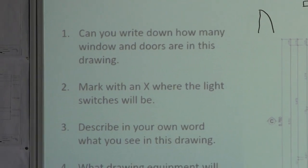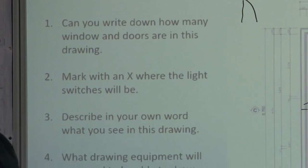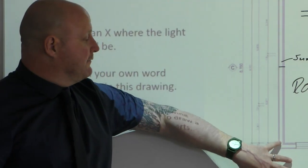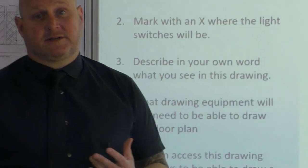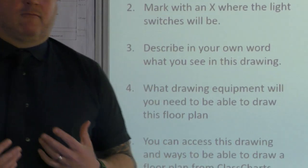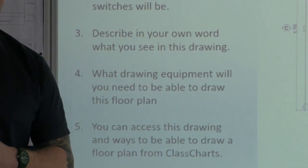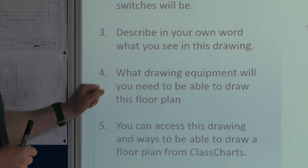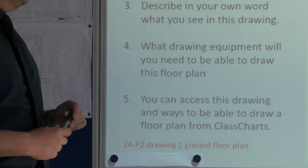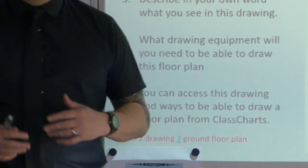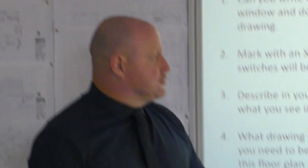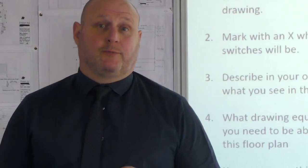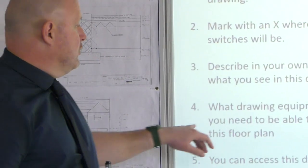The main part is describing in your own words what you see in this drawing. As I've explained, I've given you a little bit of a demo of how you would explain and interpret this drawing. Remember what I said: explain it and write it down to someone that could be blind. Next one: what drawing equipment would you need to be able to draw this floor plan? What I want is — if we're going to draw this by hand, which some of you will learn to do — what drawing equipment would you need to be able to draw this drawing by hand?